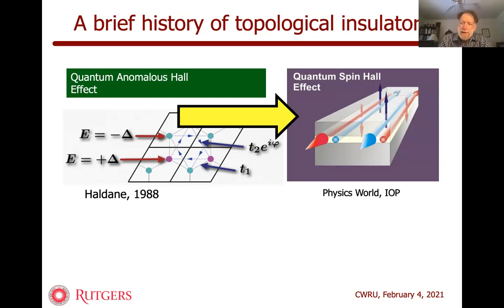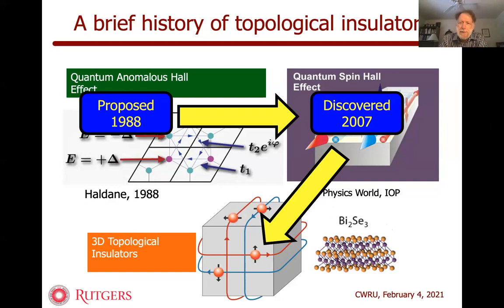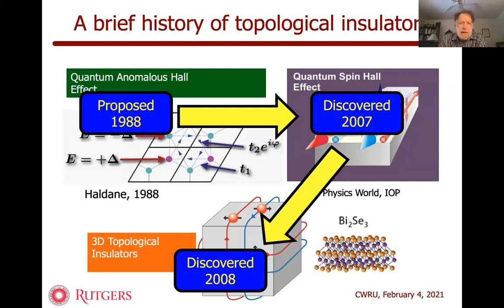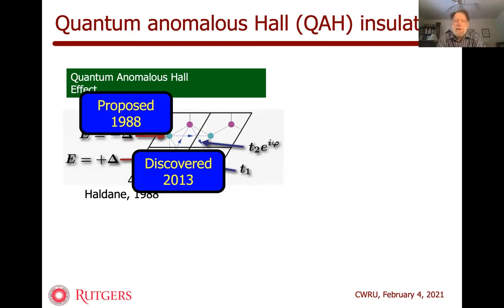Going up to three-dimensional systems, there are what people now call three-dimensional topological insulators or sometimes strong topological insulators — for example, the well-known bismuth selenide class. The dates: 1988 for the theoretical prediction, the quantum spin Hall effect was discovered in the laboratory in mercury telluride films in 2007, then the bismuth selenide class of materials in 2008. The quantum anomalous Hall effect itself took a little longer and was not demonstrated experimentally until 2013.